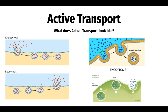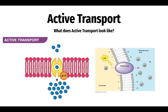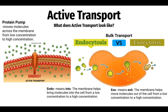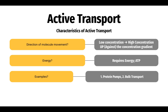Here we have endocytosis coming in and exocytosis going out, and this structure is called a vesicle. And here again is a protein pump — a protein in the membrane moving things from low concentration to high concentration with the use of ATP, cellular energy. This concludes active transport. We're dealing with protein pumps and endocytosis and exocytosis for bulk transport. Remember we are going from low concentration to high concentration, which requires energy — ATP. Thanks for listening, I'll see you in the next one.